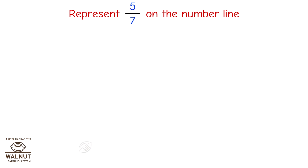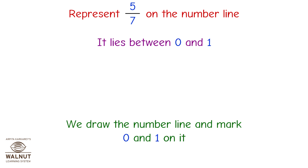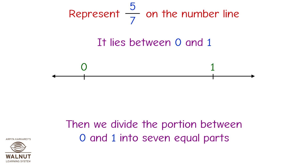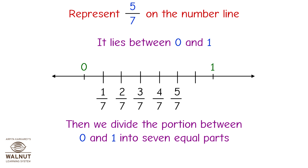Represent 5 upon 7 on the number line. It lies between 0 and 1. We draw the number line and mark 0 and 1 on it. Then we divide the portion between 0 and 1 into 7 equal parts: 1 upon 7, 2 upon 7, 3 upon 7, 4 upon 7, 5 upon 7, 6 upon 7, 7 upon 7. This is 5 upon 7.